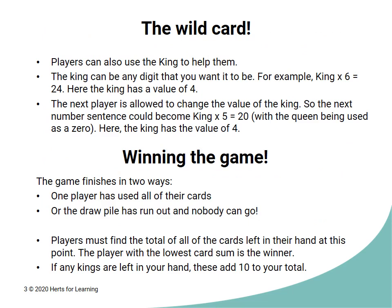The wild card. As I mentioned earlier, the king is a wild card. This means that the king can be any value that you choose. For example, if laying king times 6 equals 24, then the king has a value of 4.